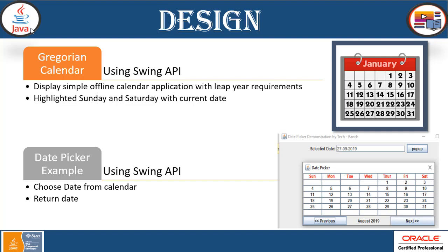So first we have the offline application — a Java application which is going to display the calendar. This will check for the leap year requirements, complete all the objectives, and implement it with the help of the Swing API.